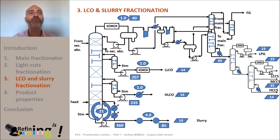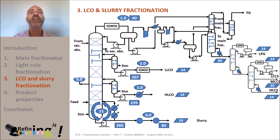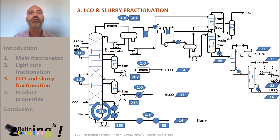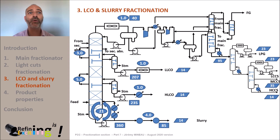Please also note that we often implement one or two more pump-arounds in this column — in our case, we will consider two. This will lead to an extra 8 giga calories per hour of energy recovered. This energy can be used either to preheat the feed, reboil the stripper, or produce steam. Recovering calories in the tower leads to decreasing the overhead condenser duty down to 22 giga calories per hour.